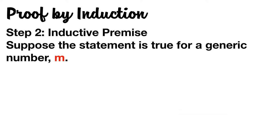Next, we'll move to step two, which is called the inductive premise. For the premise, we will suppose the statement is true for a generic number M. This is equivalent to domino M being knocked over.